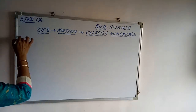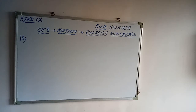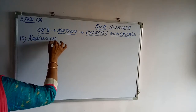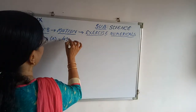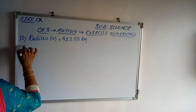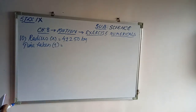Now we are going to solve question 10, the last question in the exercise. An artificial satellite is moving in a circular orbit of radius 42,250 kilometers. Calculate its speed if it takes 24 hours to revolve around the earth. Data: R = 42,250 km, T = 24 hours.